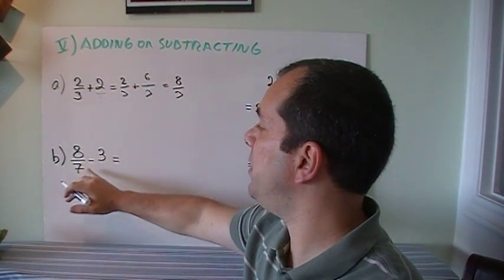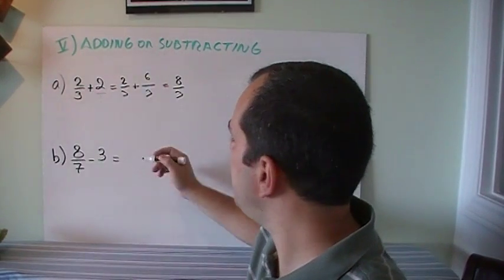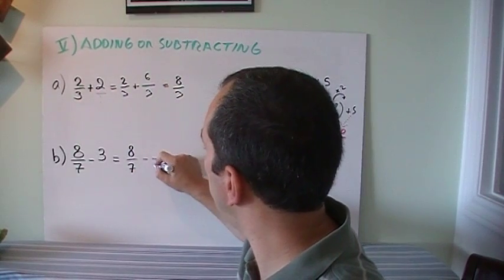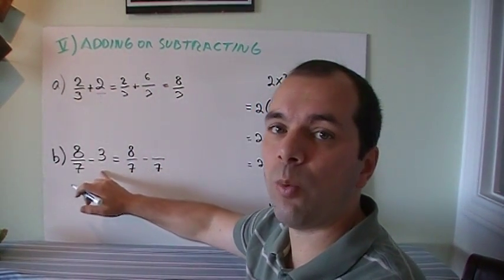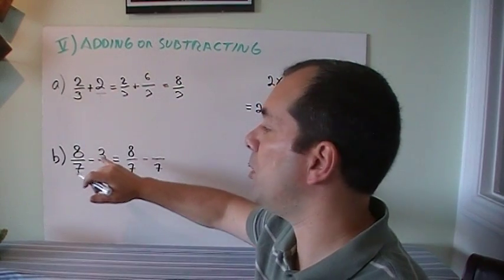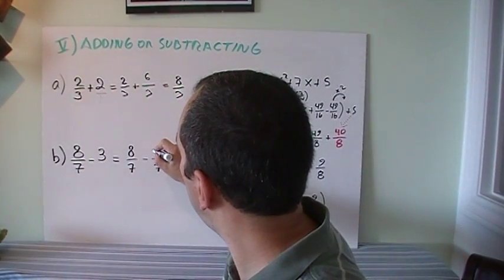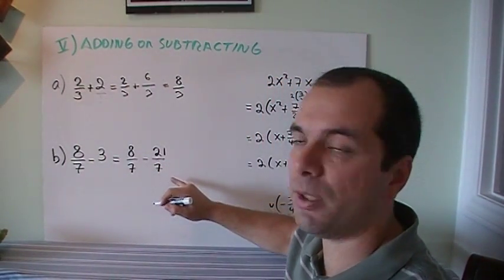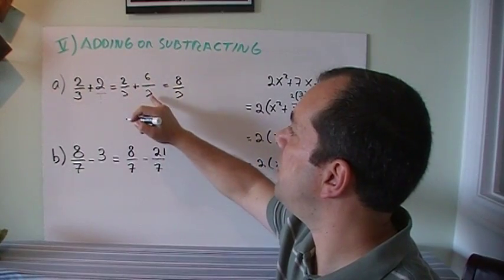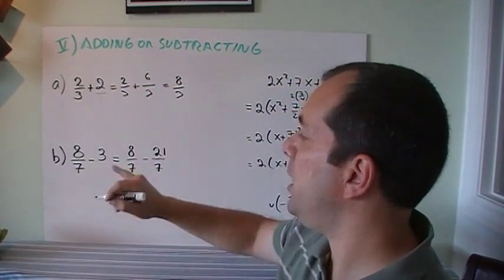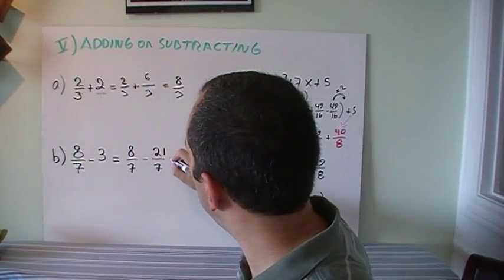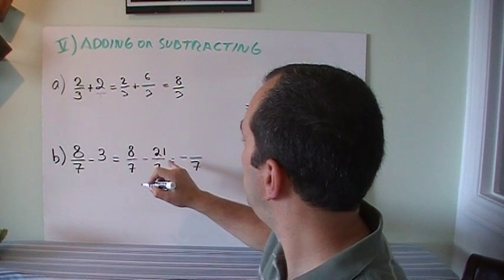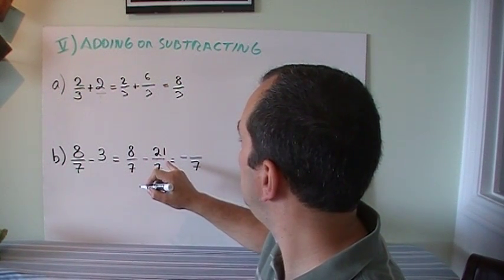So 8/7 minus 3. Well, I need to write it as 8/7 minus something over 7. So there's a 1 underneath. The 1 times 7 makes it 7. So I've got to multiply the top. 21 on the top, because that's 7 times 3. And then you can tell that 21 divided by 7 is 3. So that's the same thing. And I just put them together. 8 minus 21 is equal to -13/7.